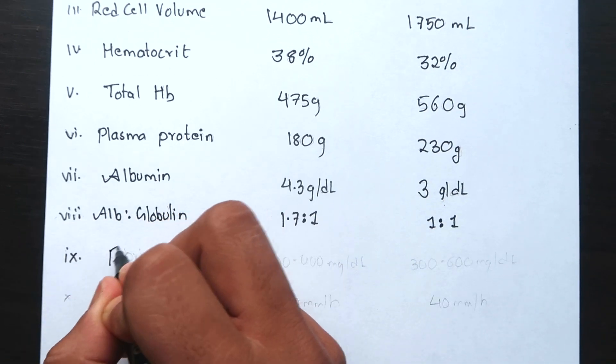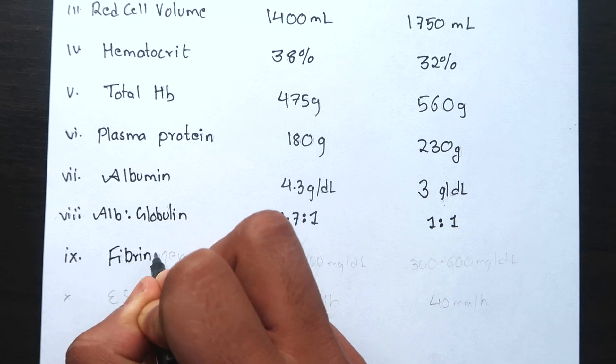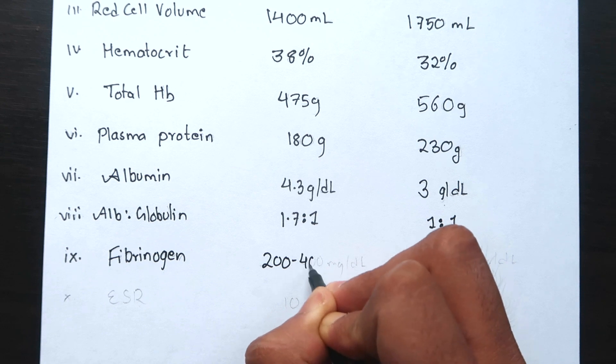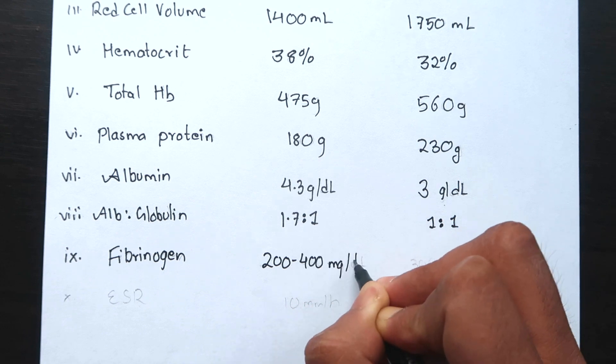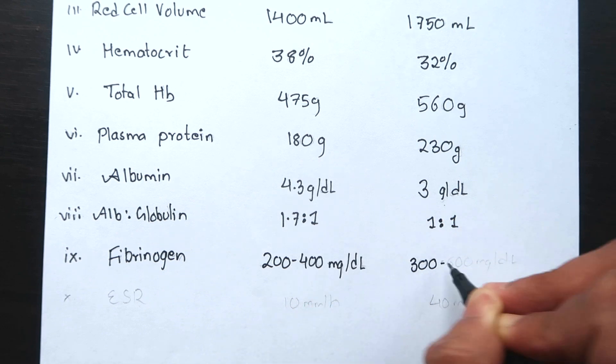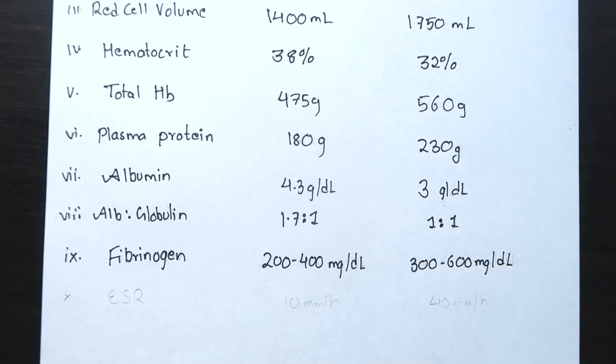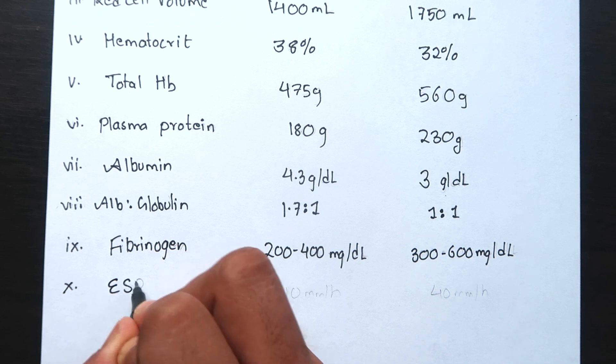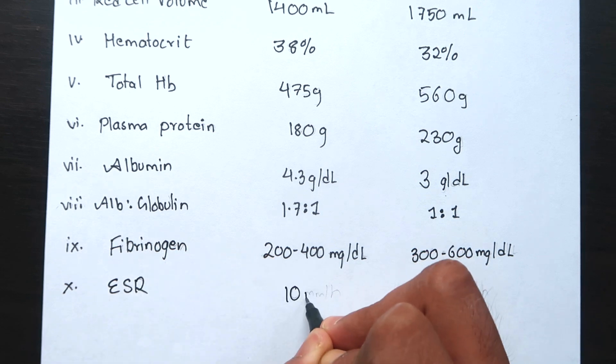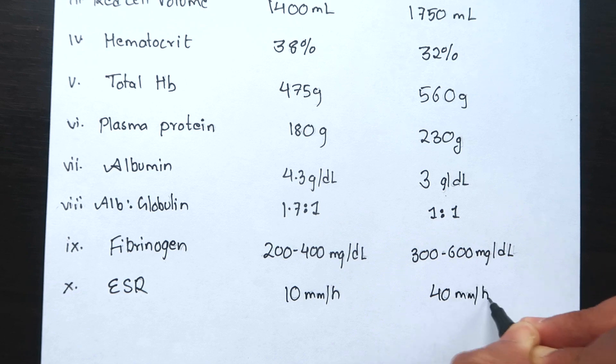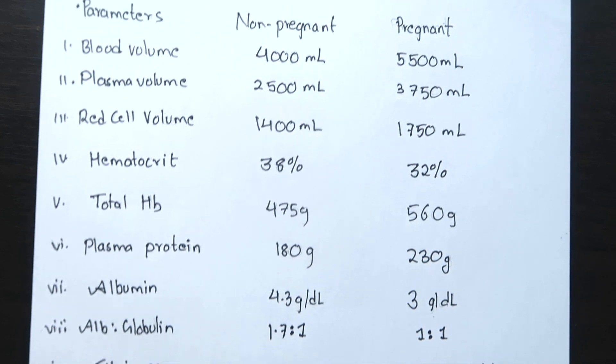Pregnancy is a hypercoagulable state. Fibrinogen level is raised by 50% from 200 to 400 mg per deciliter in non-pregnant. Due to diminished blood viscosity, erythrocyte sedimentation rate gives a much higher value, that is 4 fold increase during pregnancy although ESR has got little diagnostic value in pregnancy.